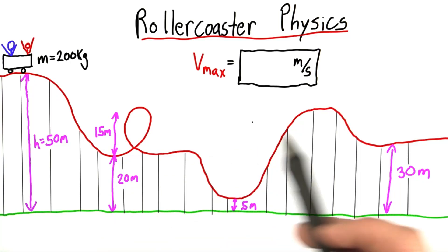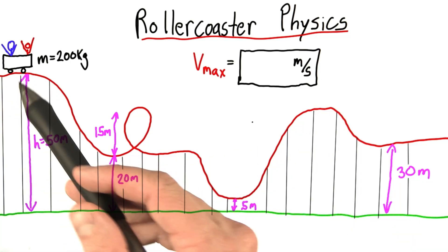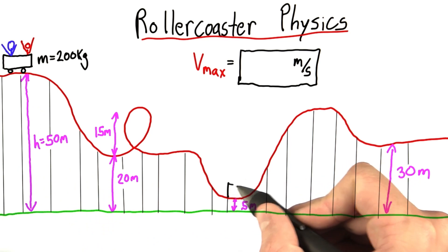Well, let's see. How do we solve this? First, I want to identify where is the roller coaster going to be going the fastest? And the answer is when it's down here.